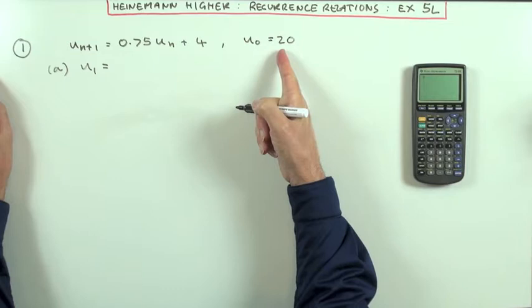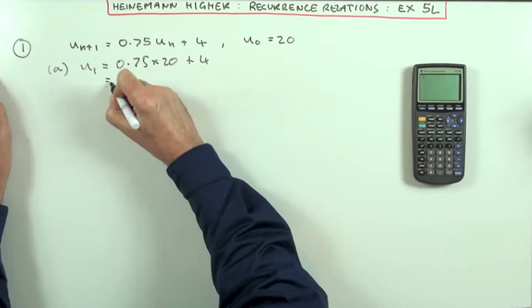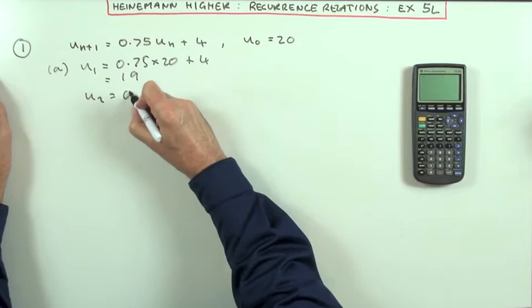If I want U₂, I can't get that straight away. I'll have to find U₁ first by using its preceding one. So U₁ is going to be 0.75 times 20 plus 4. Well, I know that's 15 and 4 is 19.